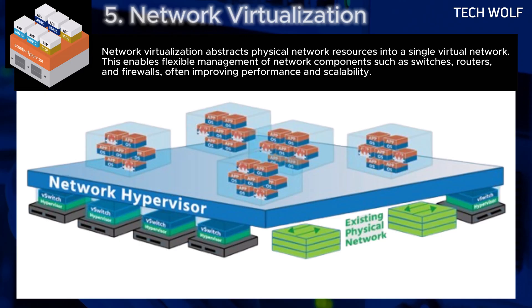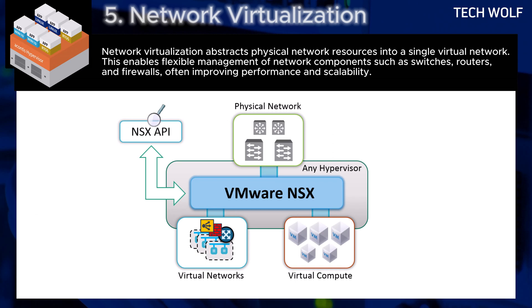Next is network virtualization. Network virtualization abstracts physical network resources into a single virtual network, enabling flexible management of network components such as switches, routers, and firewalls, often improving performance and scalability. An example is VMware NSX, which virtualizes network components to create a software-defined data center, or SDDC. Administrators can dynamically assign bandwidth and configure virtual firewalls without touching the physical hardware.